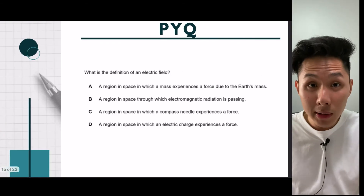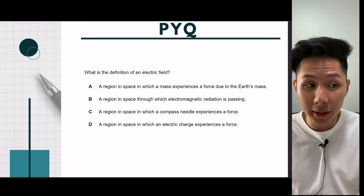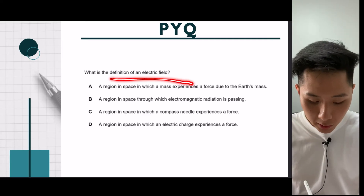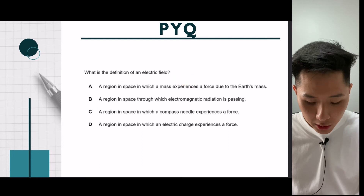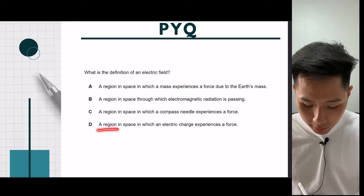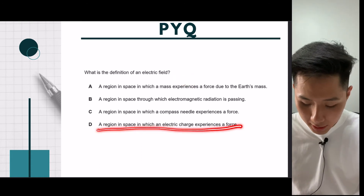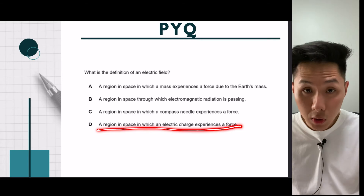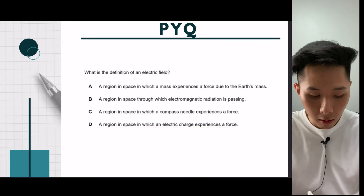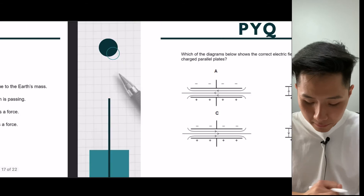Let's do some practice questions to understand what types of questions will be asked. First: what is the definition of an electric field? An electric field is a region in which an electric charge experiences a force. The force could be an attraction or repulsion.